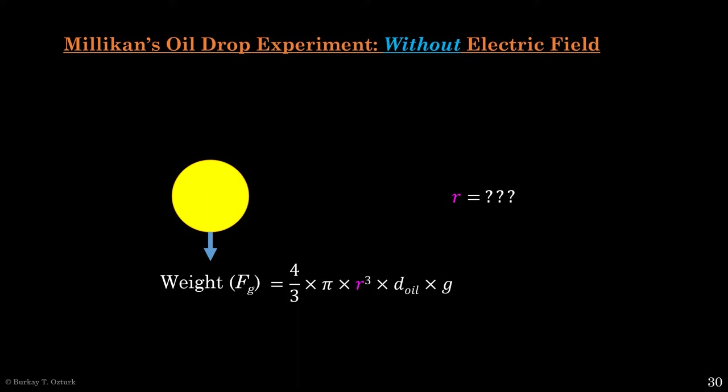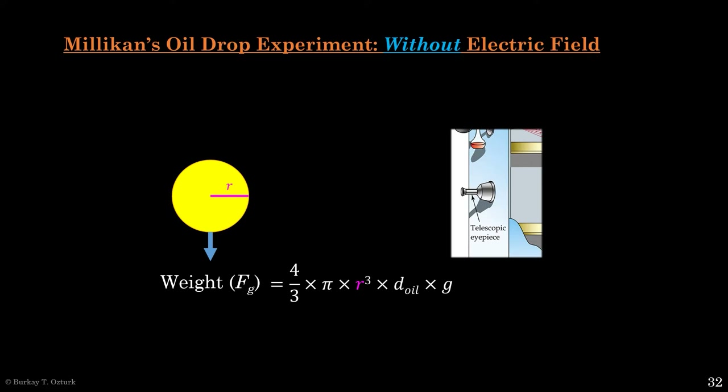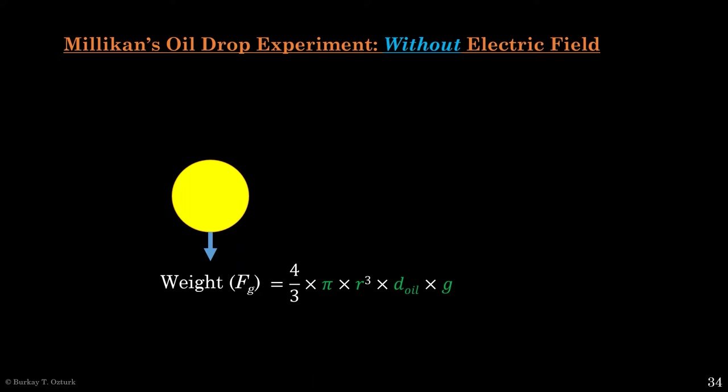But what is r? R is the radius of the drop — how can we know that? Remember, on that weird pressure cooker there was a telescopic eyepiece for observing the oil drops. Using that eyepiece, one could measure how large the drops are, which gives us r. So we know every variable and constant in this equation. That means we can compute the weight of each drop just by looking at them.